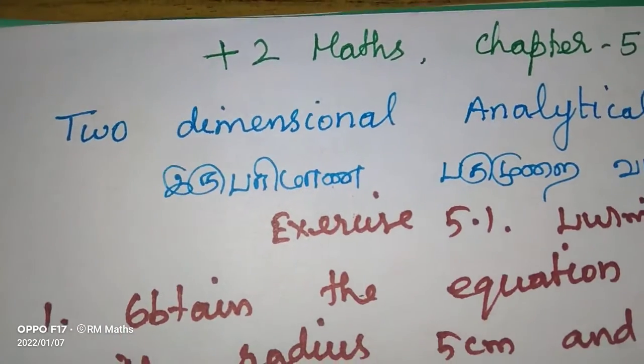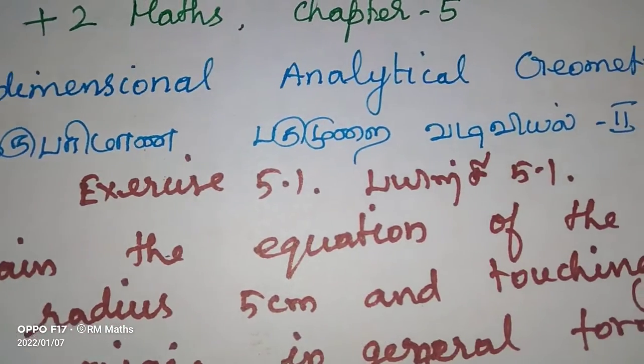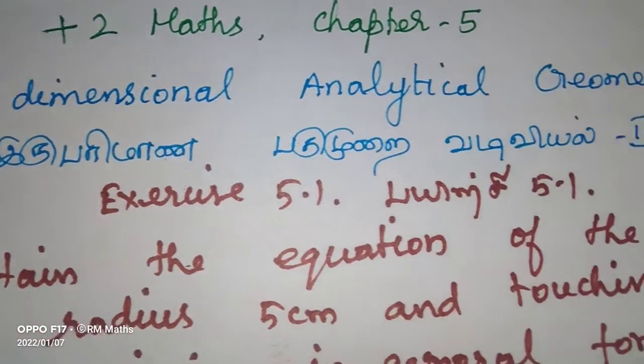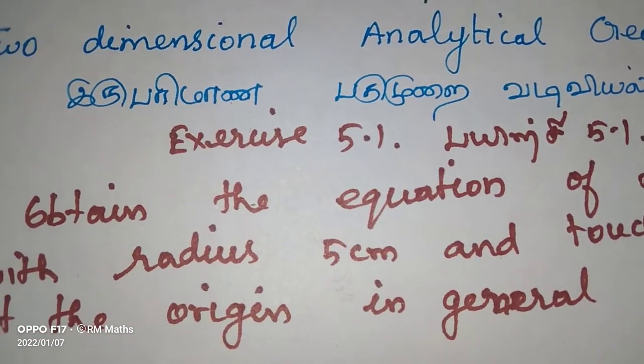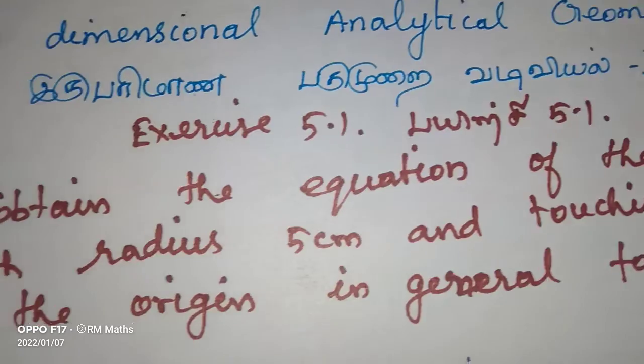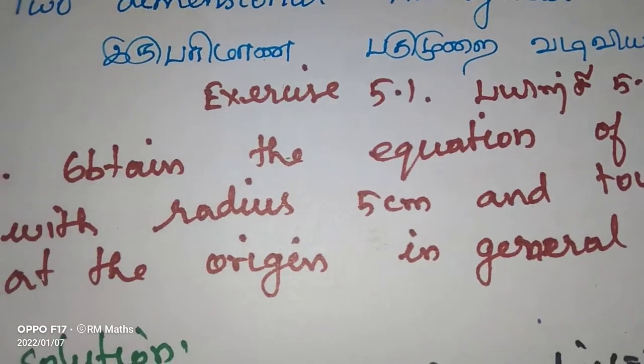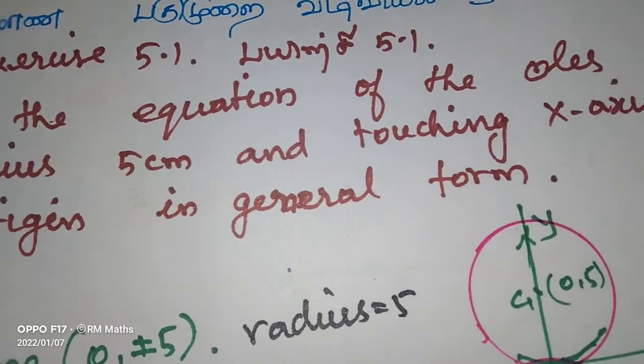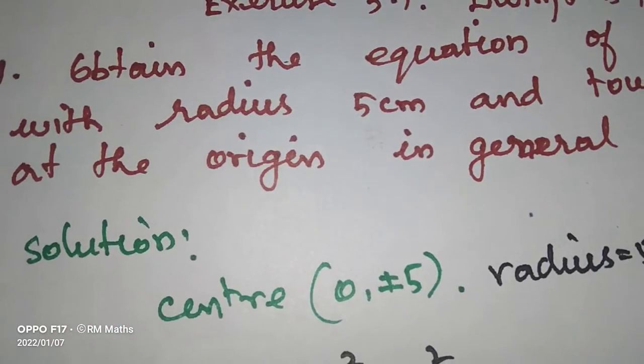Dear students, Plus 2 Maths Chapter 5, Two-Dimensional Analytical Geometry, second part. Exercise 5.1, problem 1: Obtain the equation of the circles with radius 5 cm and touching x-axis at the origin in general form.